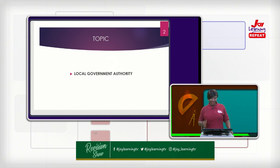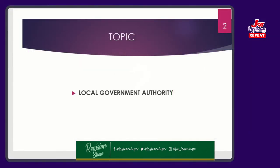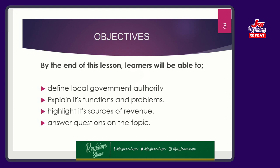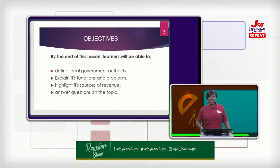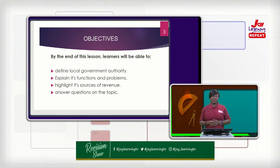I guess that you understand the word local, which means grassroots down to our level, and basically it would mean that there is an element of governance in our local area. By the time we are done, you should be able to define what local government authority is, explain its functions and problems, highlight its sources of revenue as well as ways and means to ensure that these revenue sources are sustained. And then we'll be answering some questions on the topic.